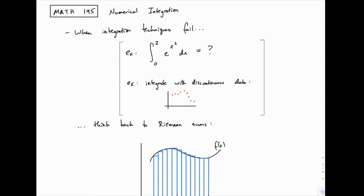For example, I've got two examples here. One is a function like e to the x squared, which doesn't yield to any of the methods we've learned. You can't use u-substitution or integration by parts or any of the other methods we've learned to integrate that function analytically to find its antiderivative, so we can't do that by hand.